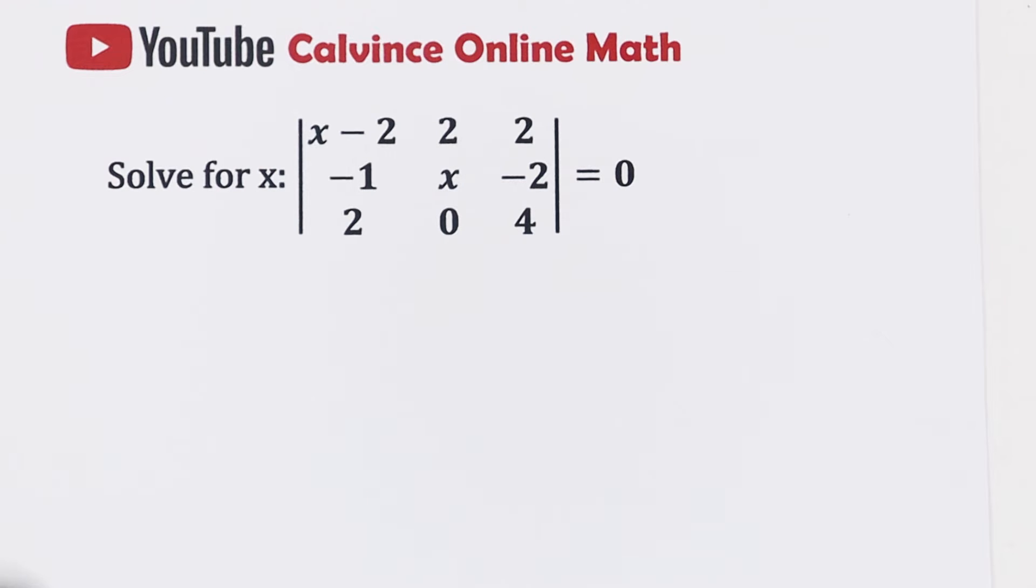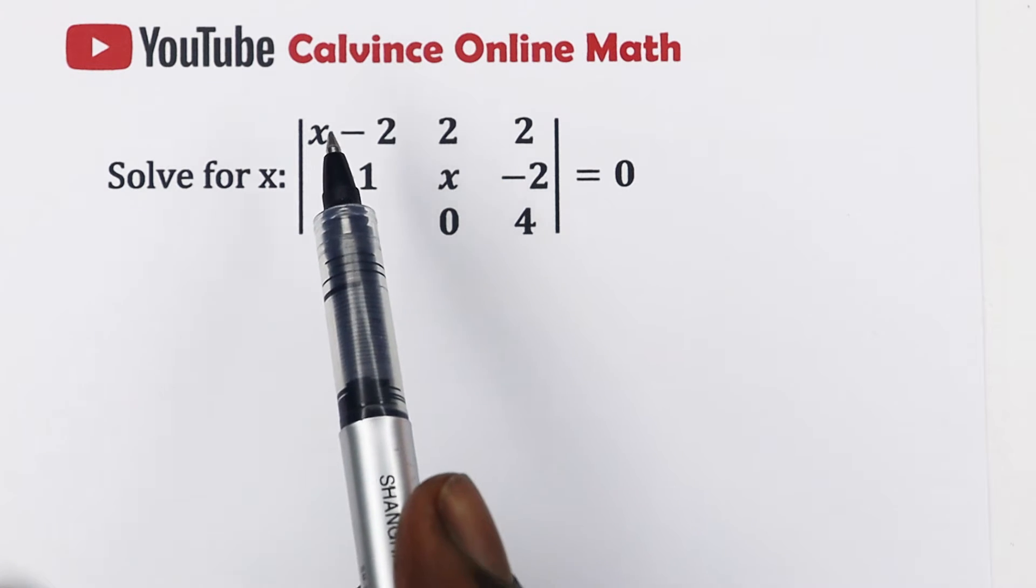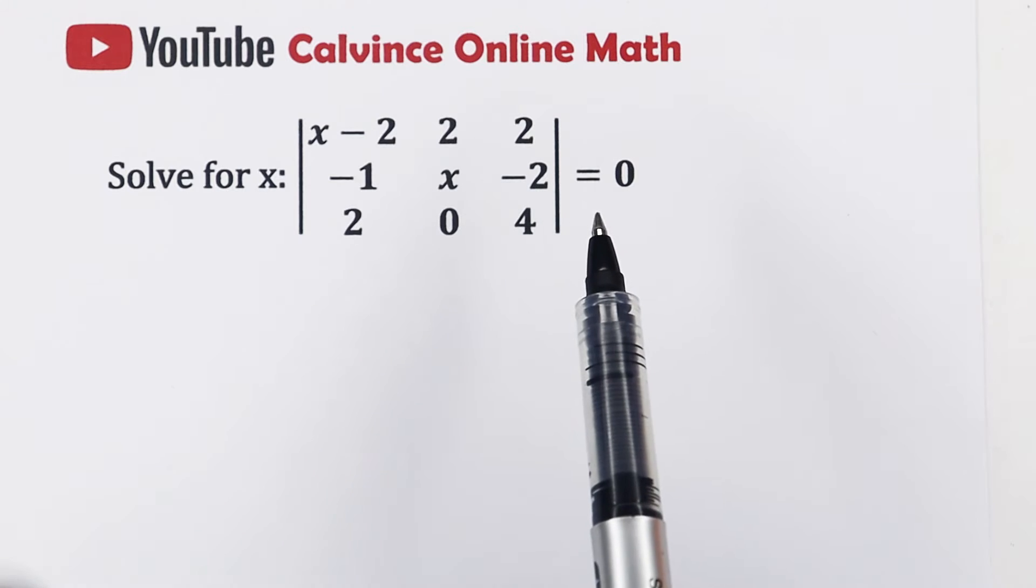In this video, we're going to learn how to solve for unknowns in a singular 3 by 3 matrix. Singular just means that the determinant is equal to 0, like in this case we've been told to solve for x if the determinant is equal to 0.